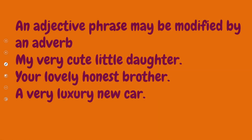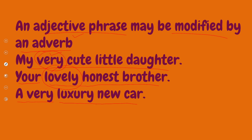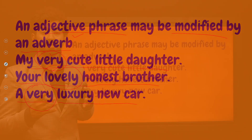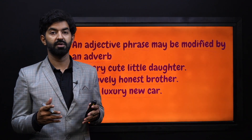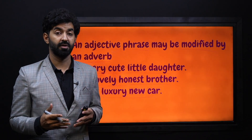An adjective phrase may be modified by an adverb, and that adverb will be called our modifier. For example: 'My very cute little daughter' — the adverb 'very' adds to our adjective phrase and gives more information. 'Your lovely honest brother' — 'lovely' is an adverb. 'A very luxury new car' — again we have an adverb. So when adverbs are added with our adjectives, they make our adjectival phrases.